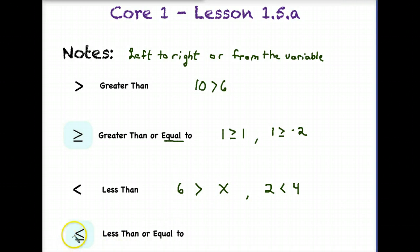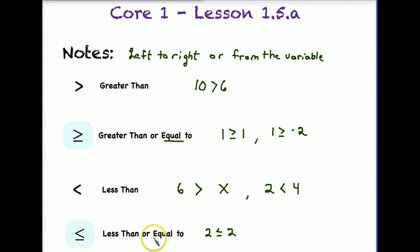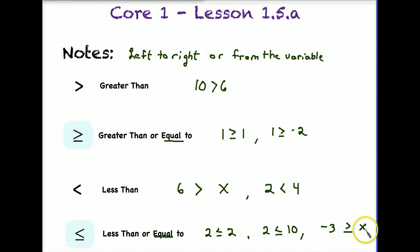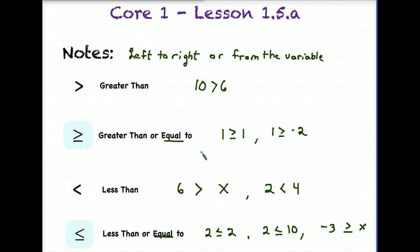Our final inequality symbol is less than or equal to. I can say 2 is less than or equal to 2, because one option is the equal sign underneath. I could also say 2 is less than or equal to 10. From a variable perspective, if x is on the right side and I want x to be less than or equal to negative 3, I read from the variable: x is less than or equal to negative 3. The big takeaway is to read inequalities from left to right, or from wherever the variable is.